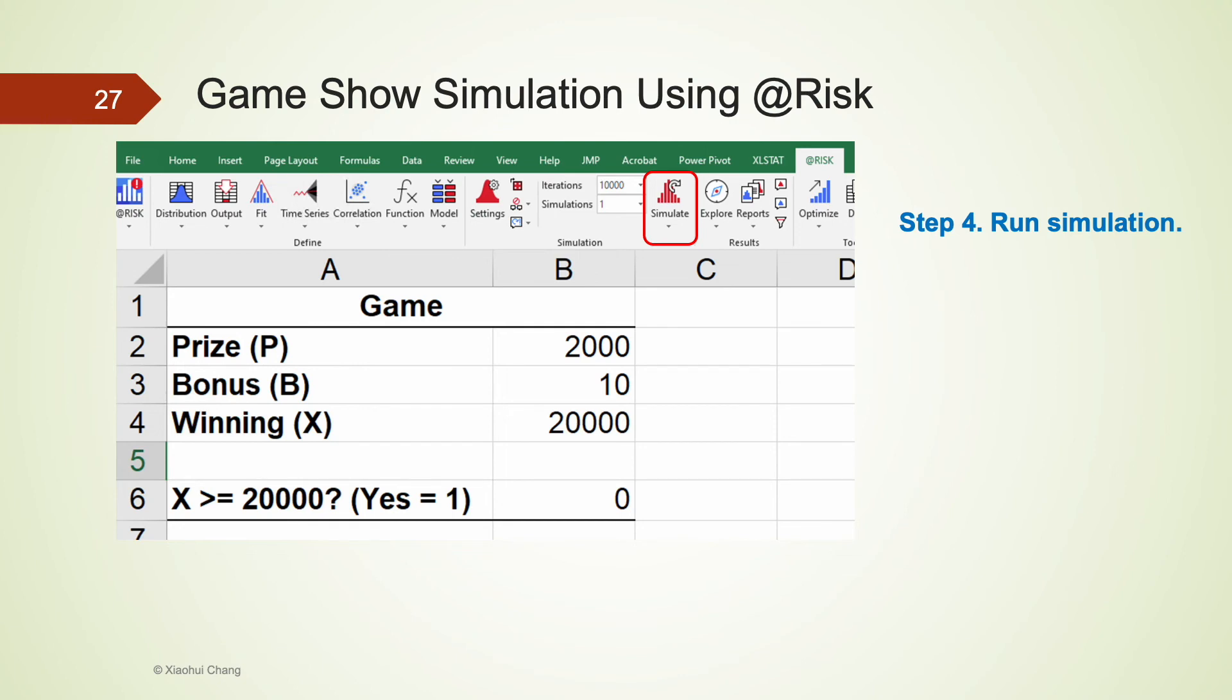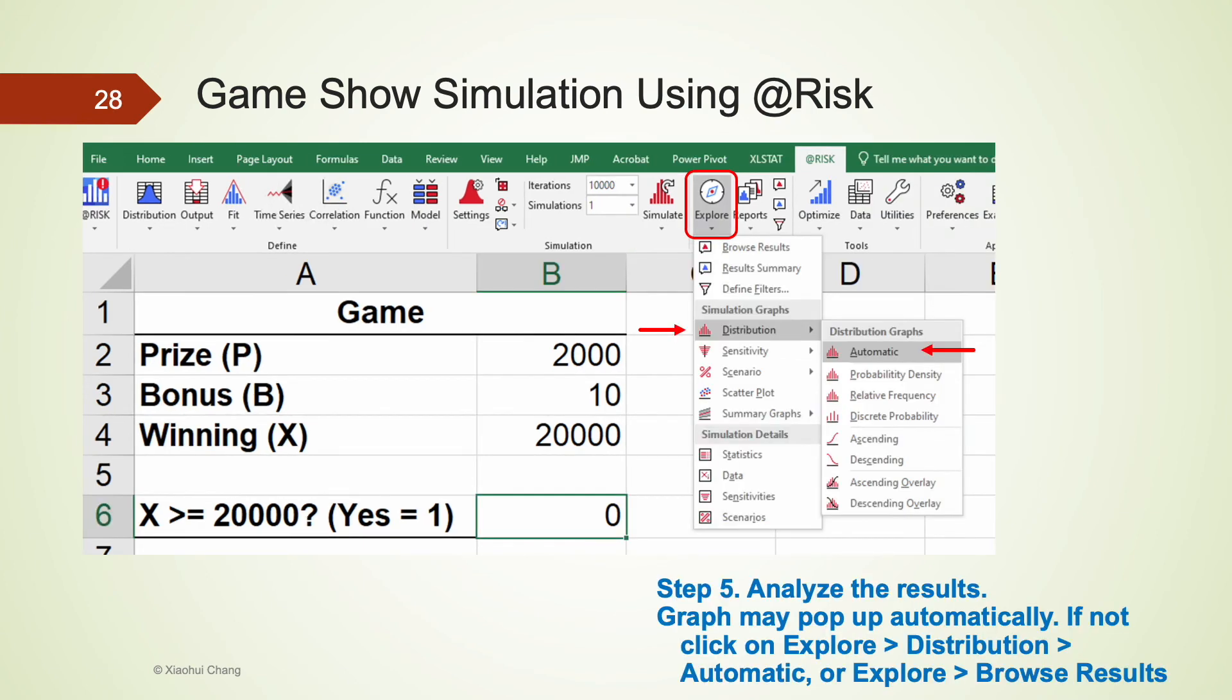Step four, we run the simulations by clicking on the simulate button on the very top. Depending on the specification of your computer, the amount of time to complete the simulations may vary drastically. So it may be a good practice to reduce the number of iterations to a smaller number, say 100 times, before you start running the full simulations of 10,000 times.